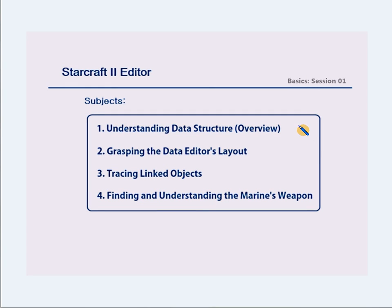In this video, I'm going to explain how data is structured in StarCraft 2, give you an idea about data objects, and show you an overview of what a unit looks like in terms of its data components. Next, we're going to look at the data editor's layout and how to navigate from data object to data object. Then we'll look at how linked data objects are presented in the editor and find the marine's weapon. Finally, we're going to look at the marine's weapon and its structure.